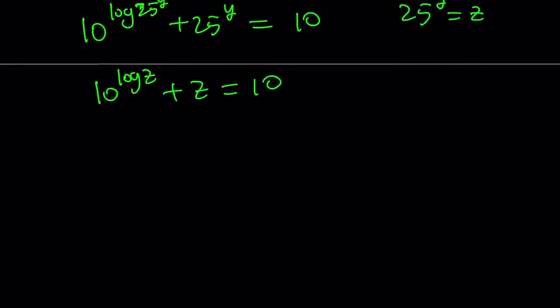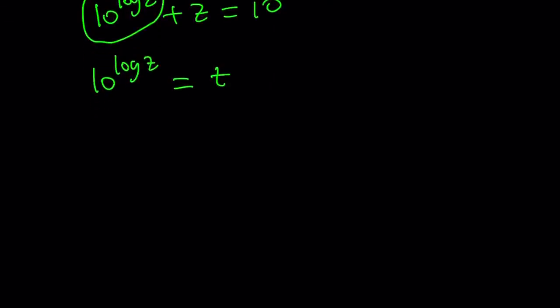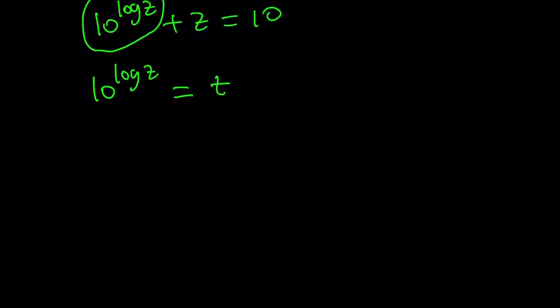So now I have 10 to the power log z plus z equals 10. So that's kind of nice because I have a single expression. I still have a log, but it's not as bad. At least I don't have two logs. To solve this, what can I do? Well, maybe we can try to simplify this expression right here. What is 10 to the power log z, right? So I don't know what it is. So let's call that t.